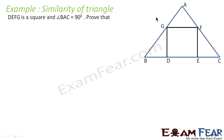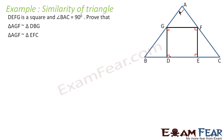DEFGH is a square — all angles are 90 degrees. BAC is also 90 degrees. We have to prove that triangle AGF is similar to triangle DGV. Also, we have to prove that AGF is similar to EFC, and DGV is similar to EFC. So let us first find the values of all the angles, then only we can prove.